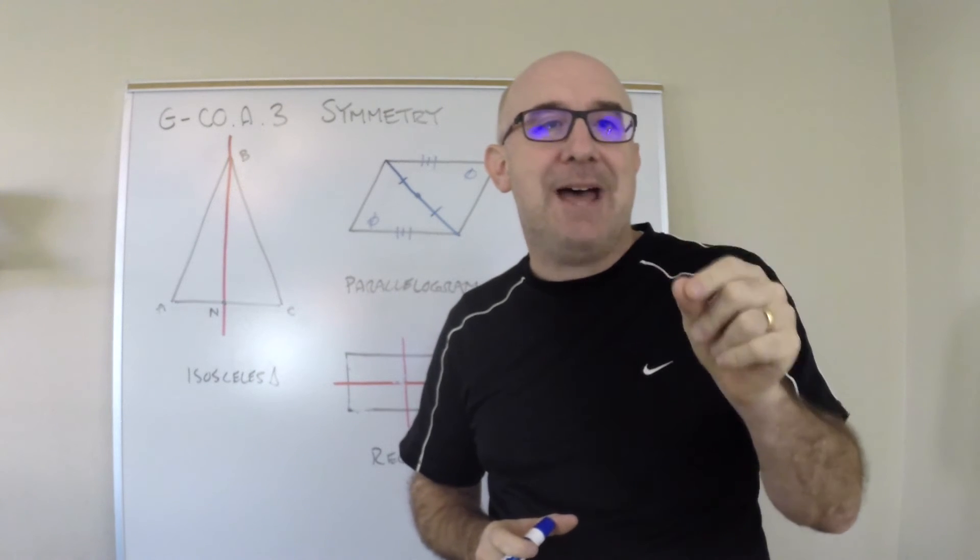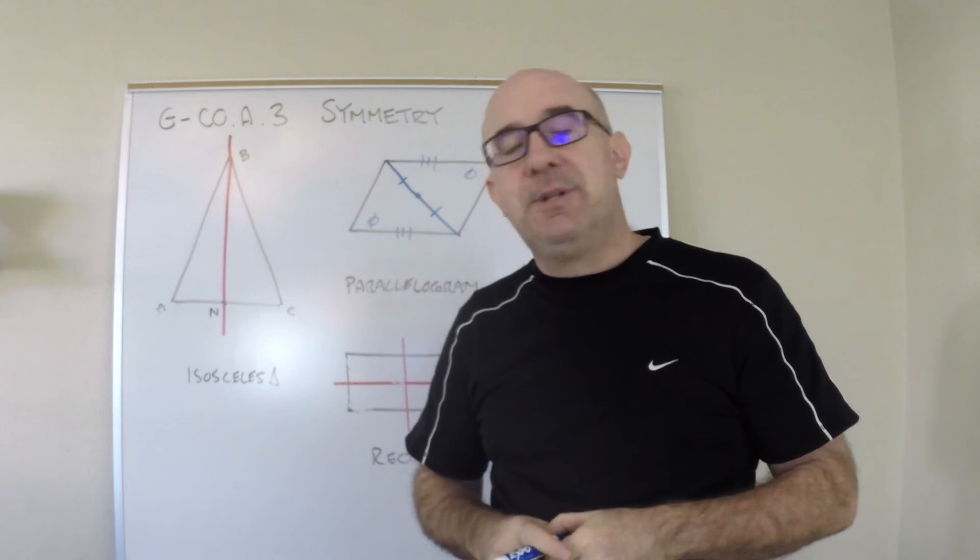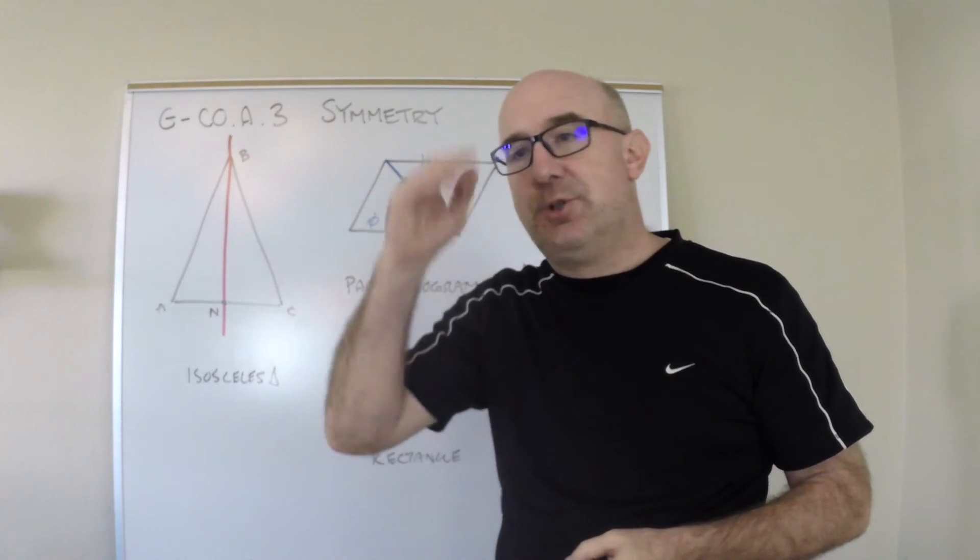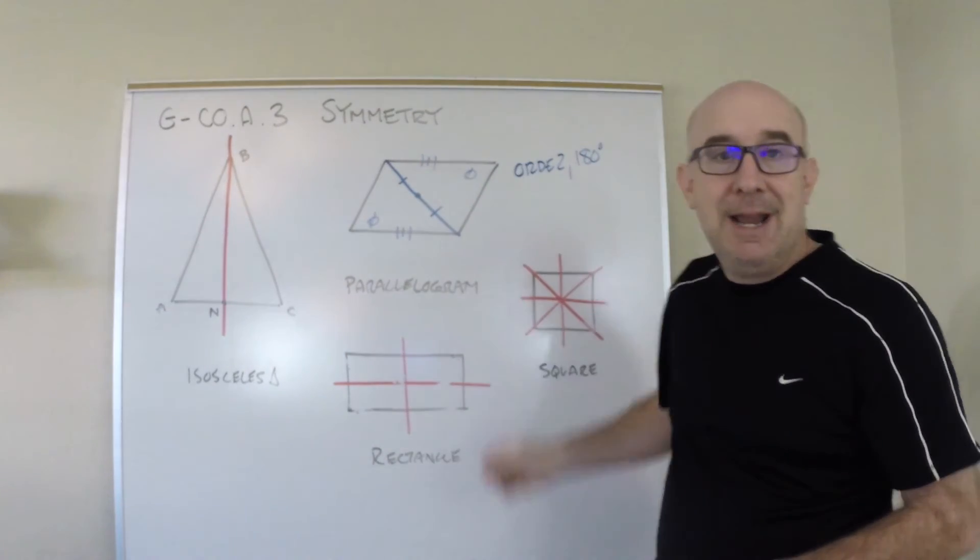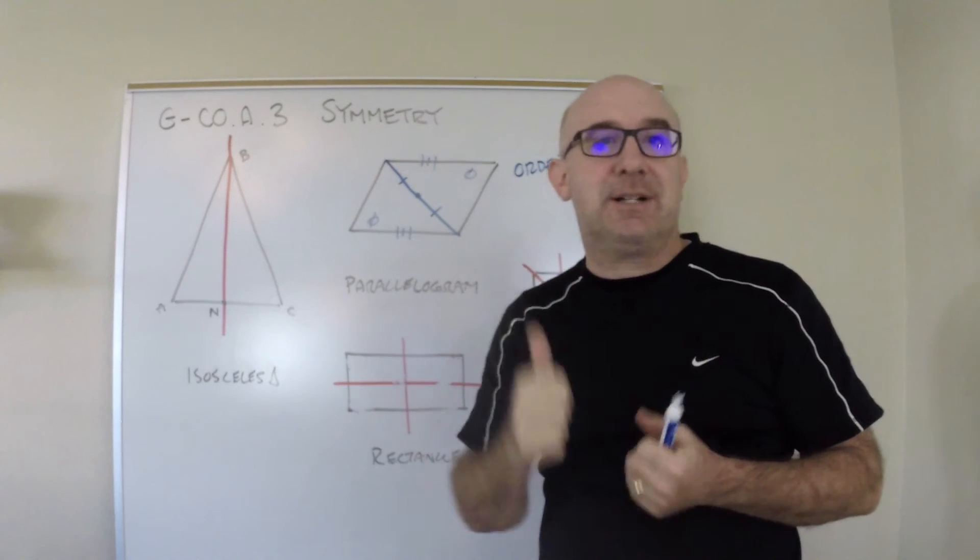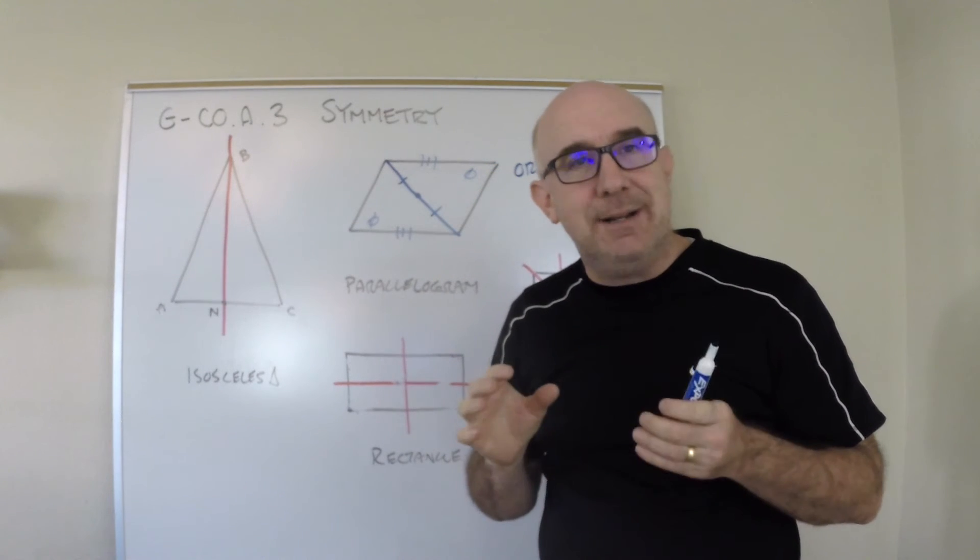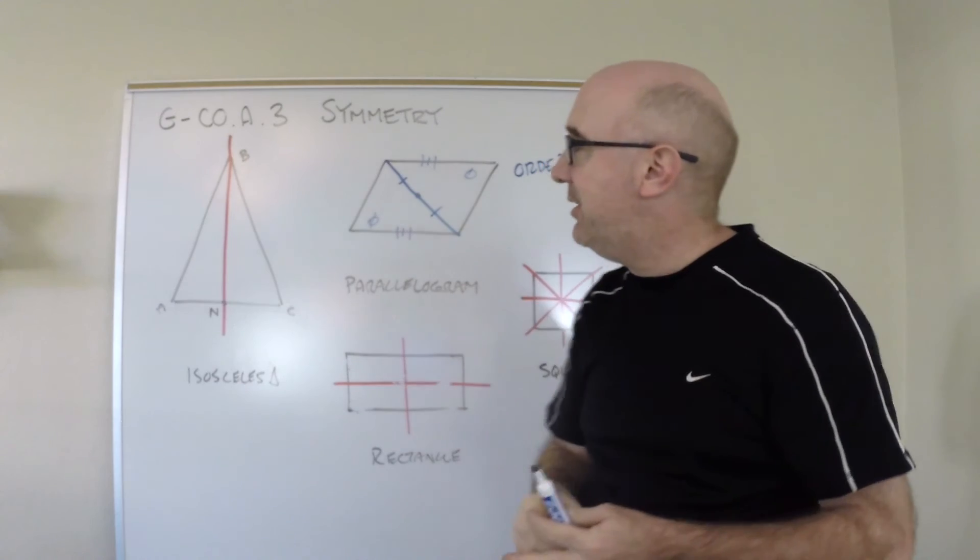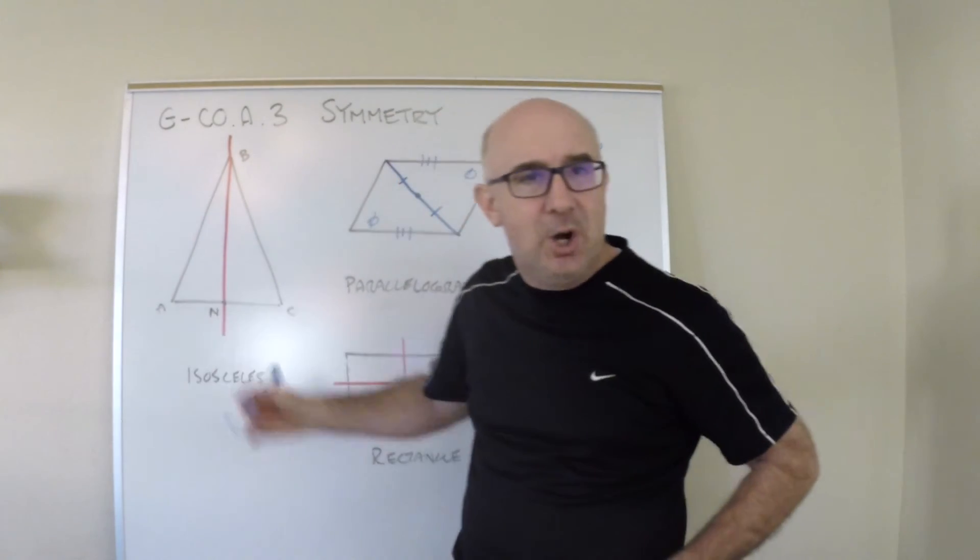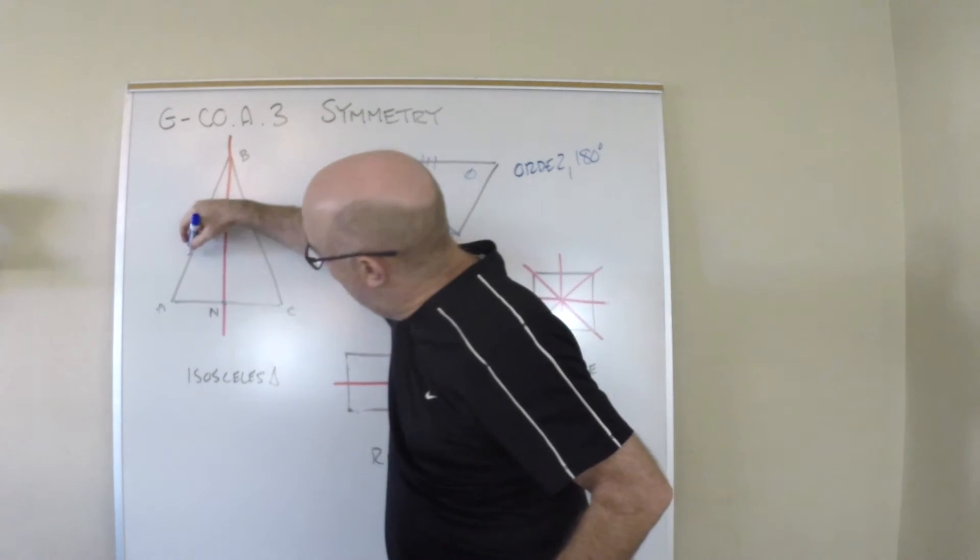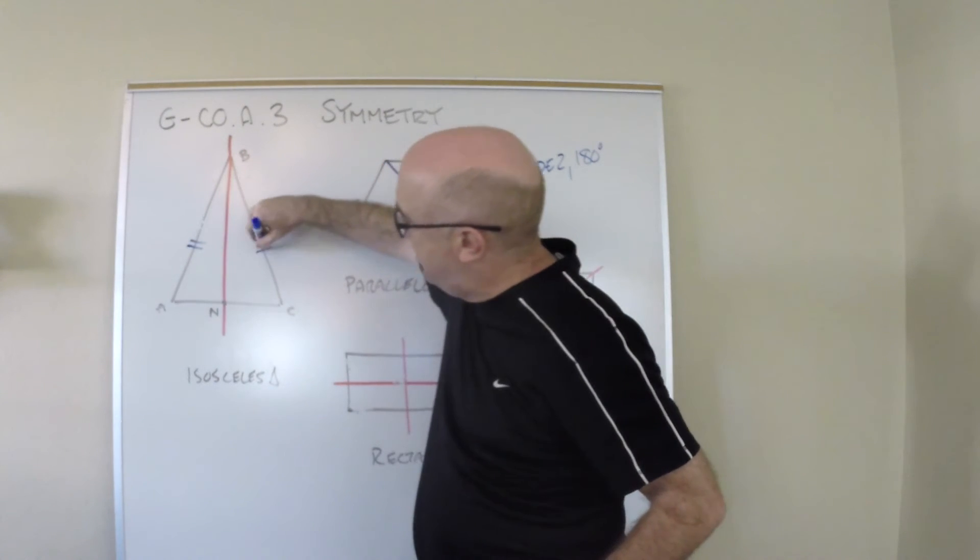So instead of just teaching kids to draw lines of symmetry to come up with the correct order and think that we got that objective handled, we did it. Until they understand what I found out the other day when I said, what do we know? And they said, well, we know that AB equals BC.